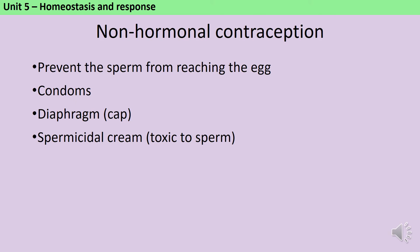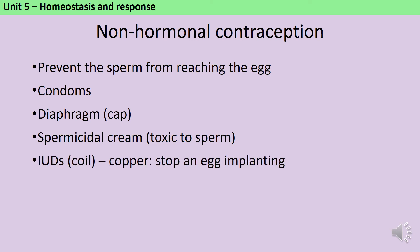Finally there's the other type of coil, the intrauterine device or IUD, and this releases copper rather than a synthetic progesterone. It can also be used as an emergency contraceptive and is actually significantly more effective than the morning after pill. Both types of coil prevent an egg from implanting even if it's been fertilized, and the copper coil can be left in for up to 10 years, although you can have it removed early if you decide to have children before that.